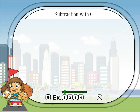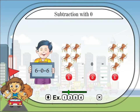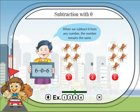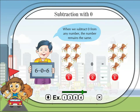Subtraction with 0: when we subtract 0 from any number, the number remains the same. 6 minus 0 is equal to 6. 5 minus 0 is equal to 5.